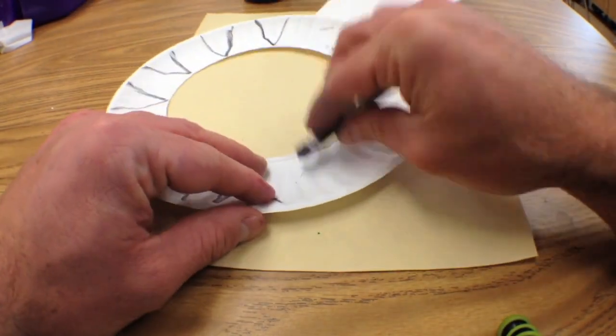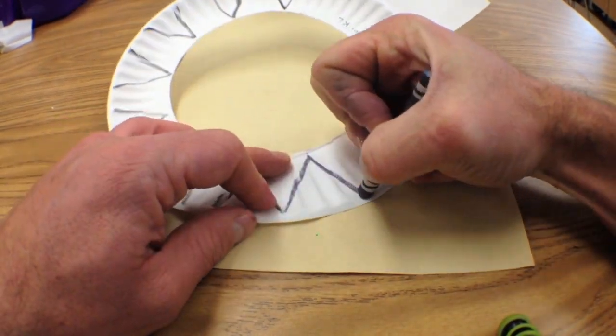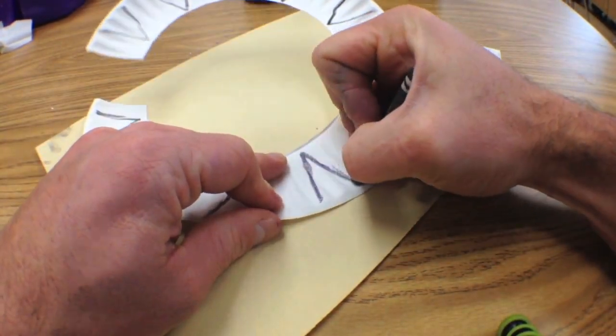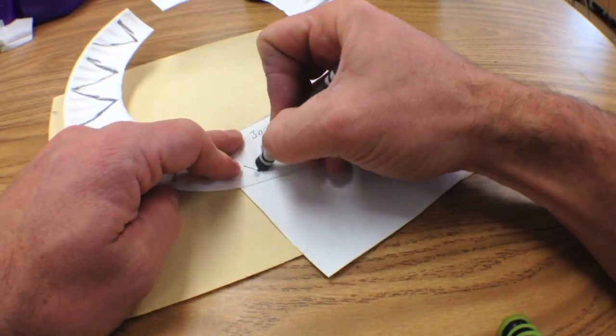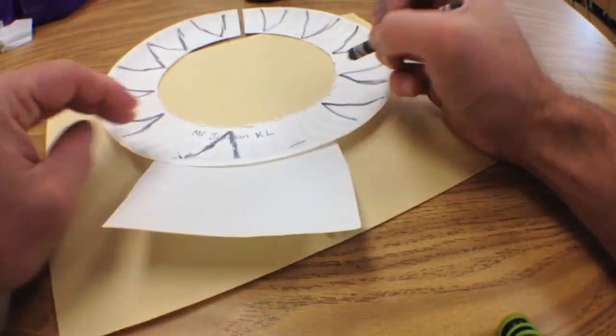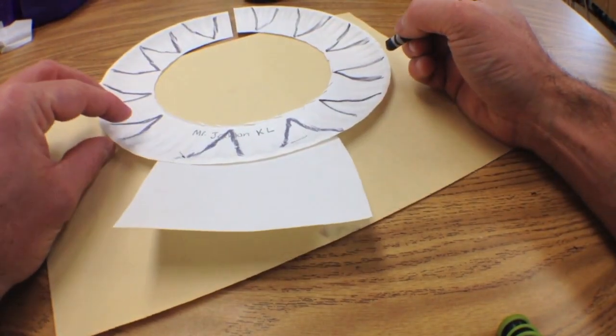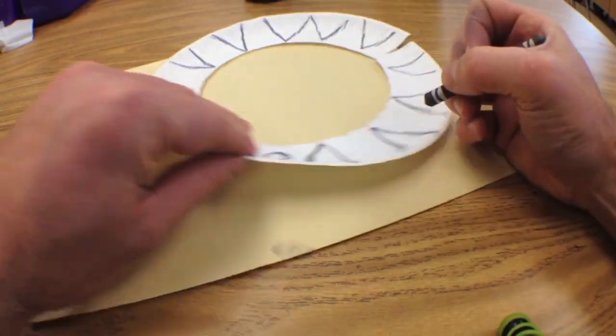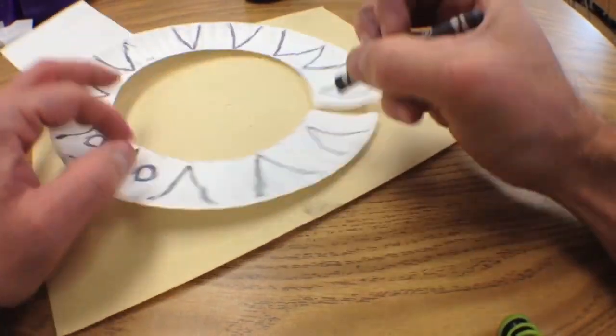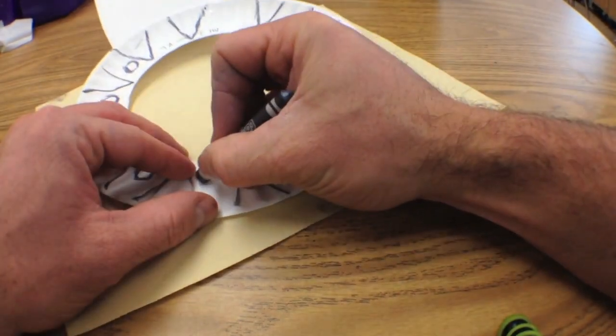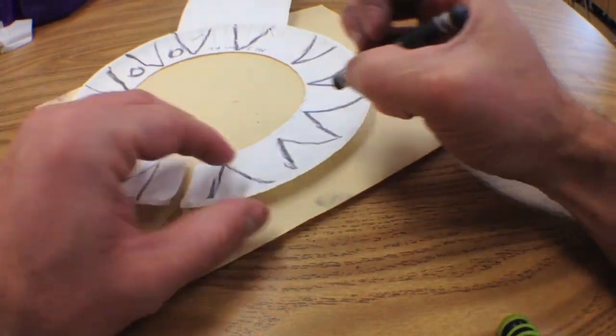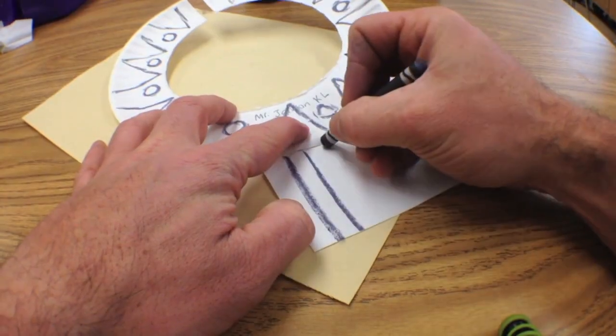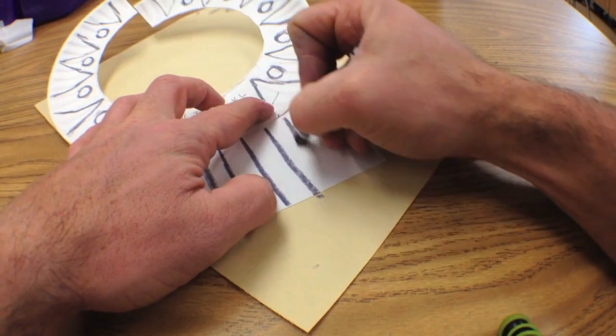Now it's time to add some pattern and decoration. So you can use a crayon, any color. And remember, a pattern is something that repeats. So I'm doing a pattern of triangles and circles. I'm not coloring anything in with the crayons yet, just drawing.